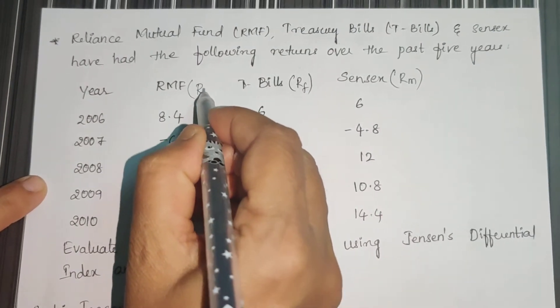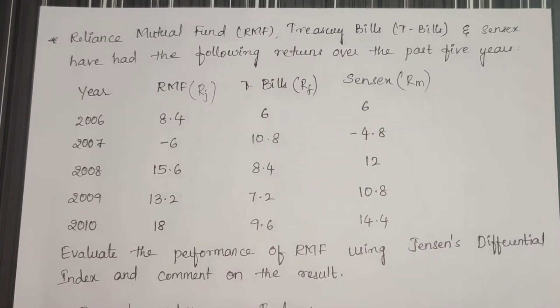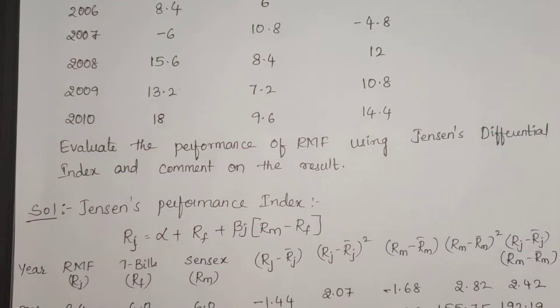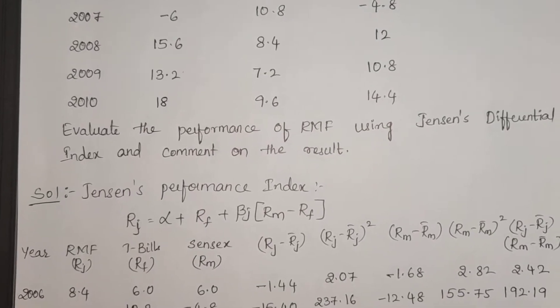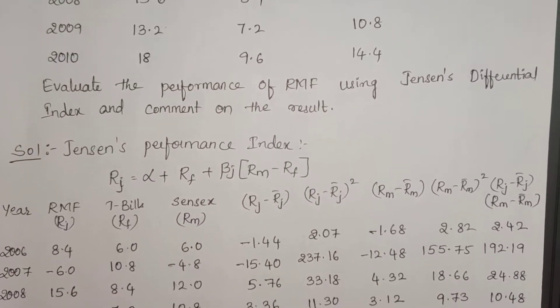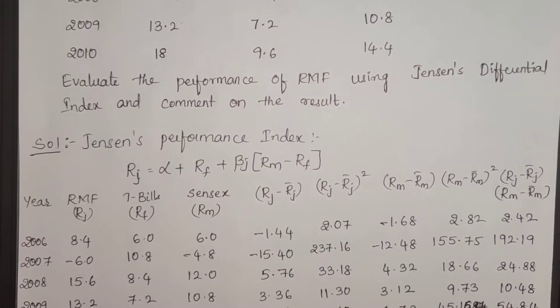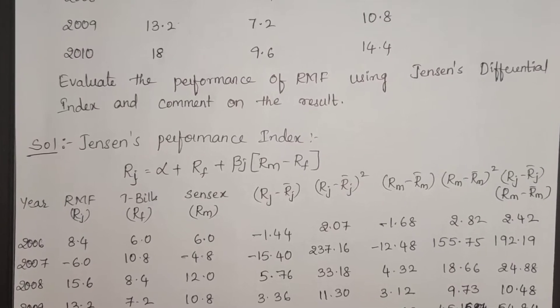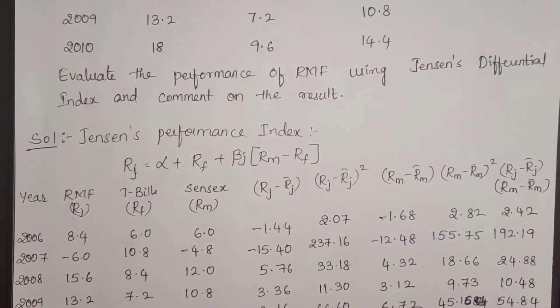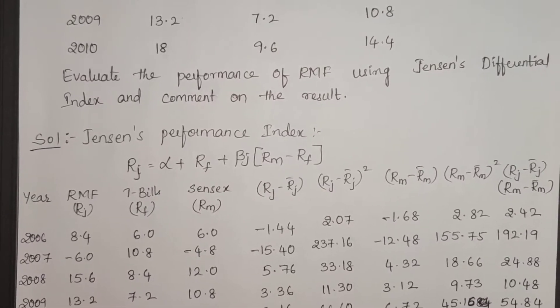This is RJ, return on security or return on fund, whatever we are going to use, that is your Reliance Mutual Fund. Now evaluate the performance of RMF using Jensen's Differential Index and comment on the result. So with the data provided, using Jensen's Differential Index, you are supposed to calculate the alpha of Jensen's Performance Index and then rank and state your opinion upon that.